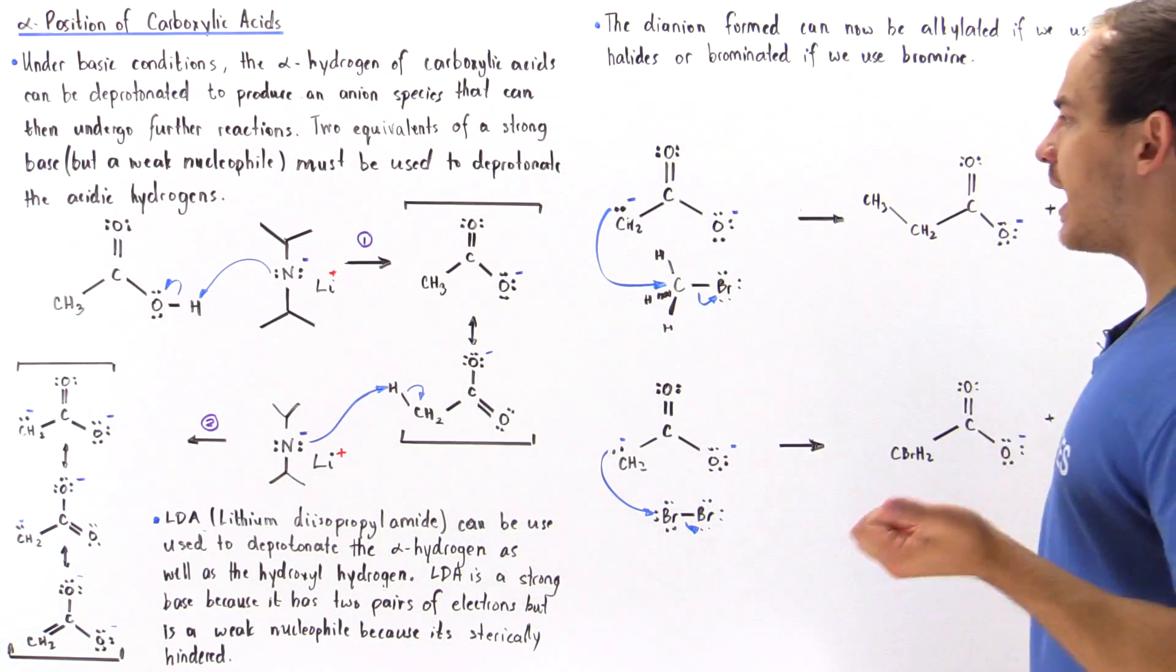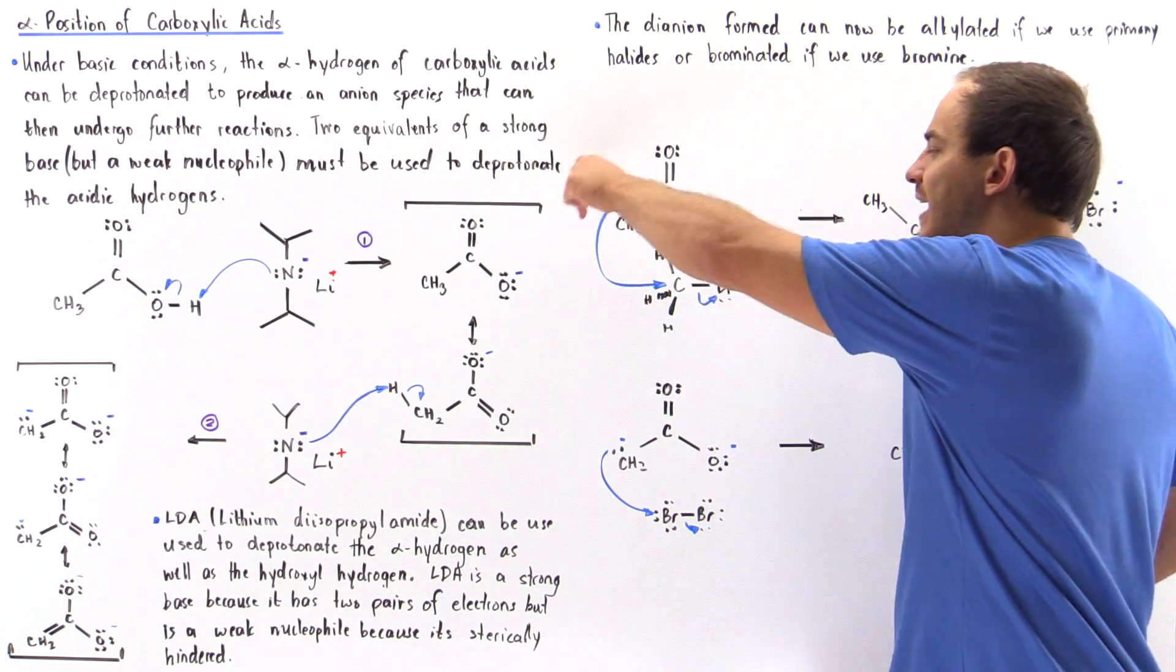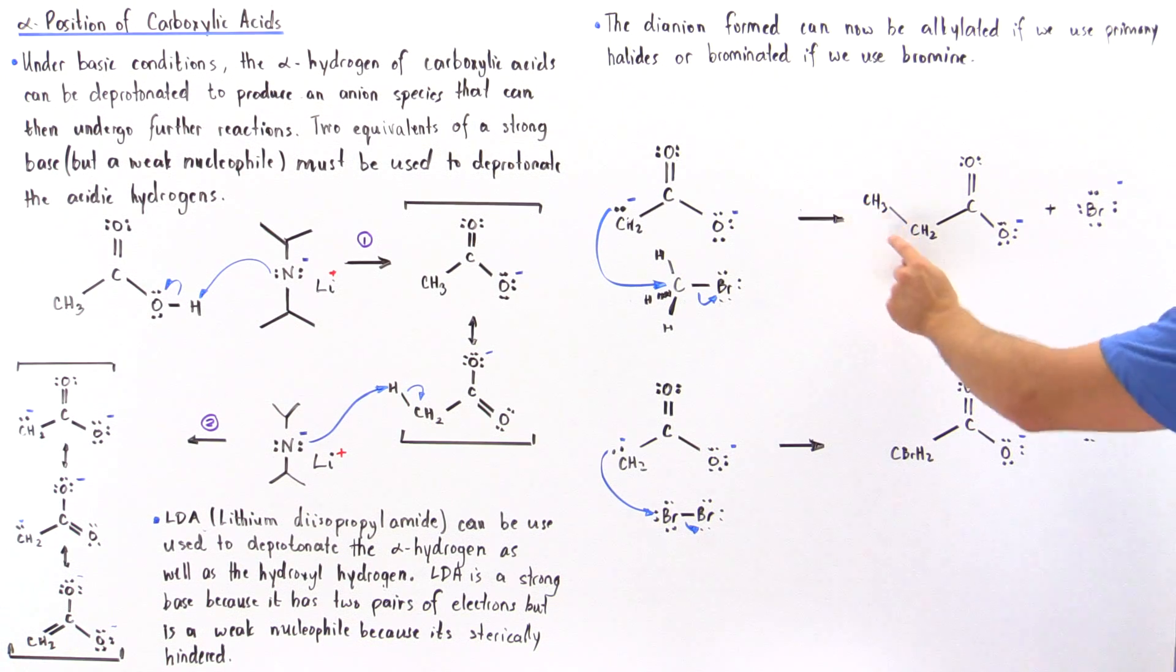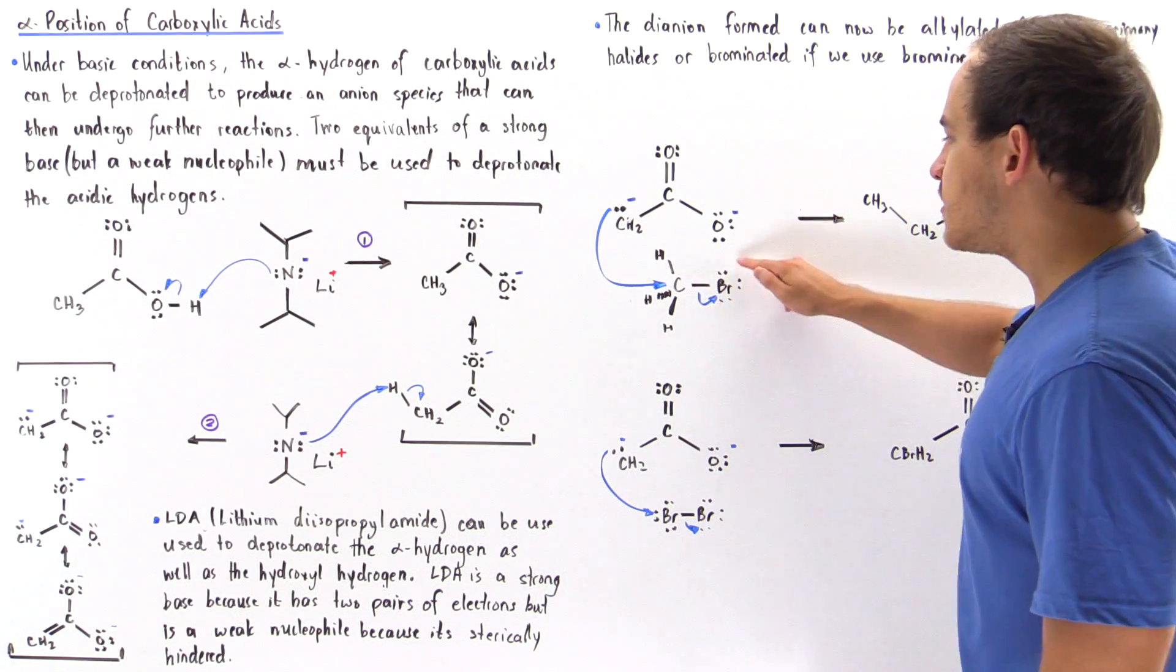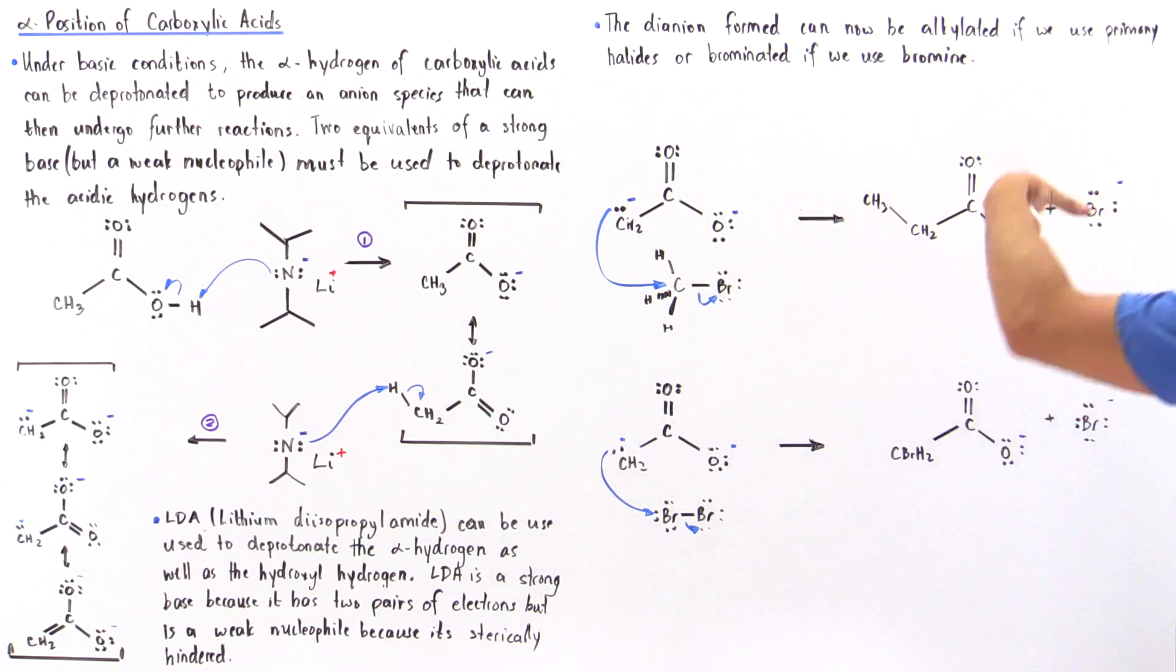reaction taking place in which this carbon acts as a nucleophile, bonding to this carbon here, forming a carbon-carbon bond, alkylating the alpha position of the carboxylic acid. At the same time, this is a good leaving group, so this bond breaks off and the bromide leaves.